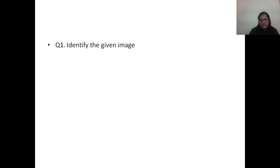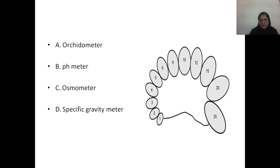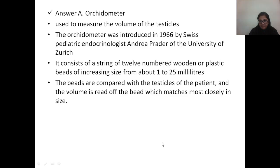The first question is to identify the given image. This image is that of an orchidometer. If you see this image clearly, you can see these oval balls with a numeric digit over them. These digits represent the volume. This image is that of an orchidometer and it is basically used to measure the volume of the testicles.